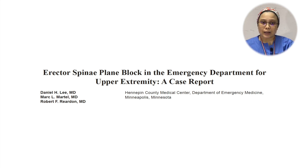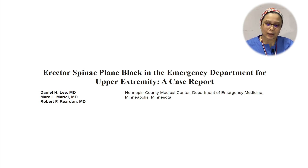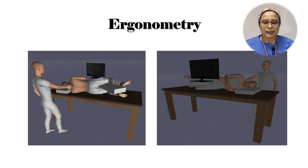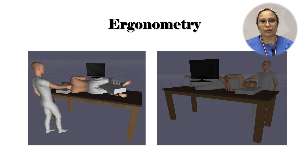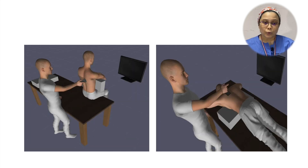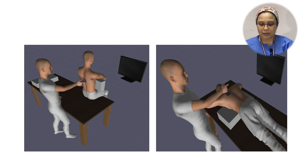Having presented enough evidence showing ESP is useful in the ED setting, let's move to the practical part. The rule of thumb for a successful block is ensuring the operator and the patient are in a comfortable position. The patient can be placed in the lateral decubitus position, making sure it is in a straight line, forming a straight line between the operator, the injection site, and the ultrasound monitor. The patient can also be placed sitting or in the prone position, as long as they are comfortable.